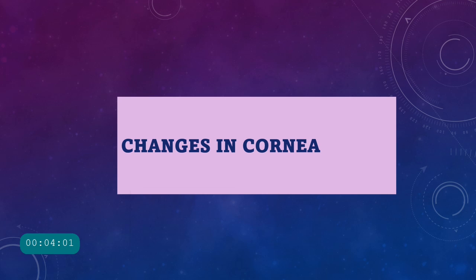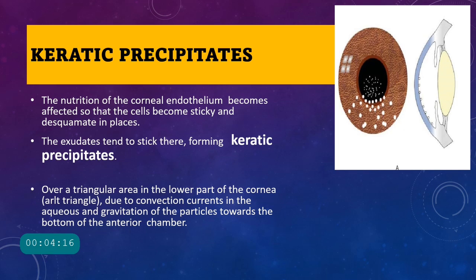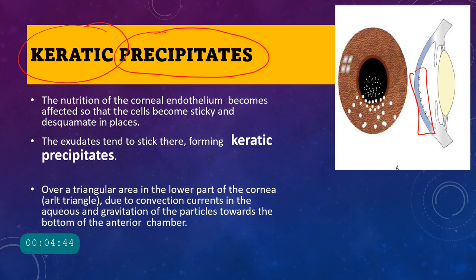Now we will study the various signs which occur in anterior uveitis step by step. First, what are the signs in the cornea? The most important is keratic precipitates. Keratic precipitates are inflammatory cells deposited on the back surface of the cornea — more exactly on the endothelium, the innermost layer. Keratic means cornea, precipitate means precipitation of inflammatory cells on the cornea.